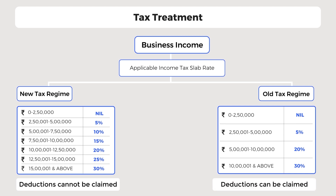Individuals with business income who have opted for the new income tax regime have a once-in-a-lifetime option to switch back to the old income tax regime and continue to avail deductions and tax exemptions. However, once this option of reverting to the old income tax regime is exercised, the taxpayer cannot opt for the new income tax regime in future years.